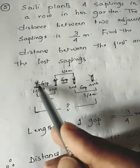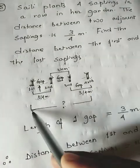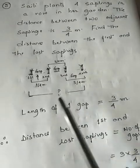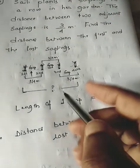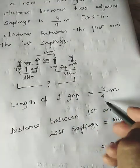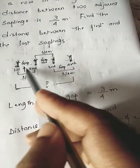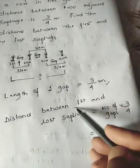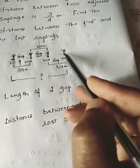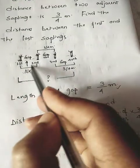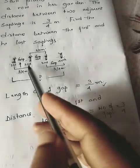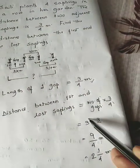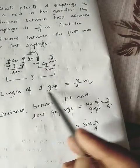We need the distance from the first sapling to the fourth sapling, marked as a question mark. The length of each gap is 3/4 meter. The distance between the first and last sapling equals the number of gaps multiplied by 3/4 meter. There are three gaps, all equal distance, so: 3 into 3/4.